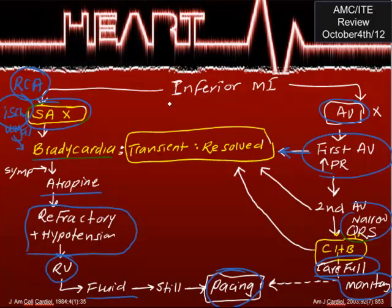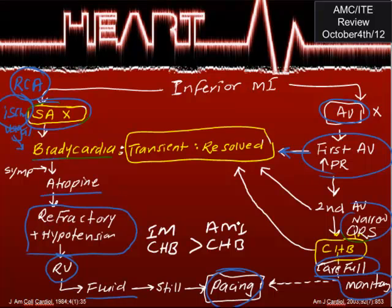An important point: complete heart block is actually more common with inferior MI than with anterior MI. However, with anterior MI, the approach to block is different — it is not transient and you don't just wait. You go with atropine and pacing. Anterior MI block requires active intervention.